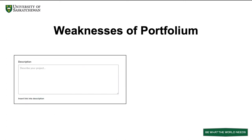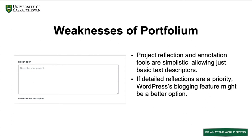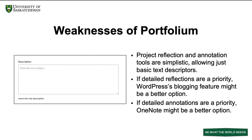Let's look now at some of the weaknesses of Portfolium, or the things that it doesn't do quite as well. Firstly, project reflection and annotation tools are simplistic, allowing just basic text descriptors. If detailed reflections are a priority, WordPress's blogging feature might be a better option. If detailed annotations are a priority, OneNote might be a better option. See the other videos for more information on WordPress and OneNote as alternative ePortfolio platforms.